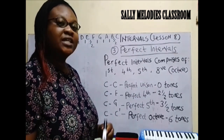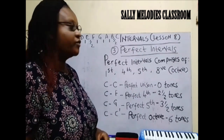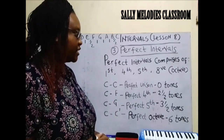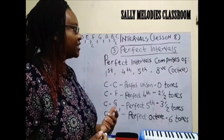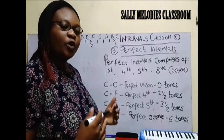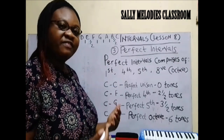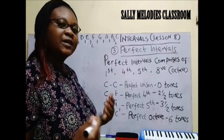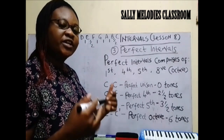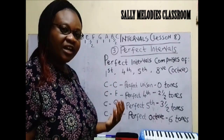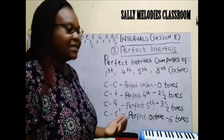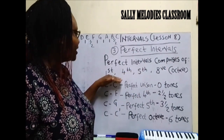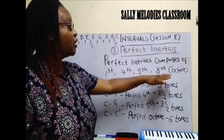In the previous lessons we did major and minor intervals and we know what they are. Now we are in perfect intervals. We said that major comprises of the second, the third, the sixth, and the seventh. And when we reduce any major by a semitone, it becomes a minor. So perfect comprises of the first, fourth, fifth, and octave.